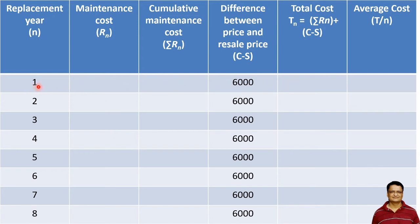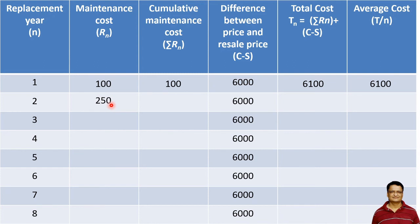At the end of the first year, the maintenance cost is 100 rupees, so the cumulative maintenance cost is 100 rupees, giving a total of 6100. At the end of the second year, the maintenance cost is 250 rupees, so the cumulative maintenance cost will be 350, which is the summation of these two values, and with 6000 it gives 6350. Dividing by 2 we get an average cost of 3175.